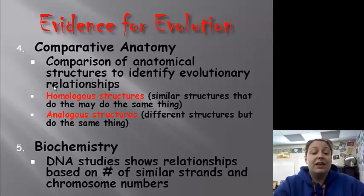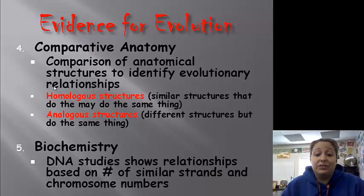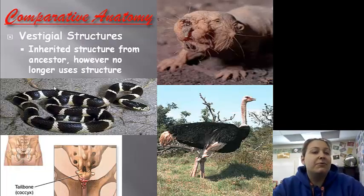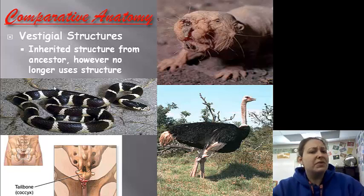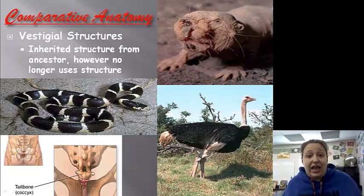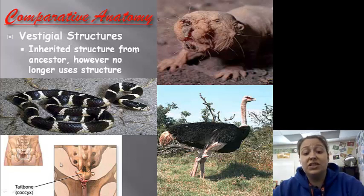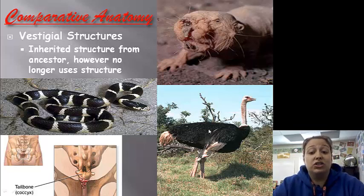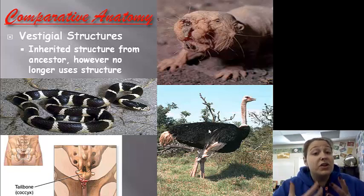Finally, we have biochemistry — looking at the DNA and studying the relationships between DNA patterns, base numbers, similarity of strands, and chromosome numbers. When we look at comparative anatomy, we also see vestigial structures — inherited structures from ancestors that are no longer used today. The naked mole rat is blind but still has vestigial eyes. Some snakes have little vestigial legs they don't use. In humans, we have a tailbone, or coccyx — we don't have tails, but we still have this bone. For the ostrich, they have wings but don't fly.